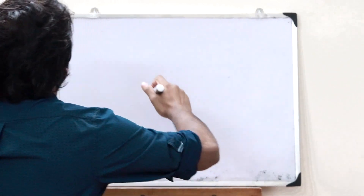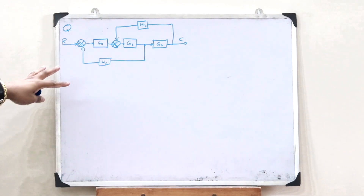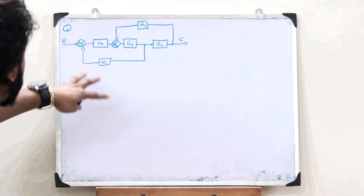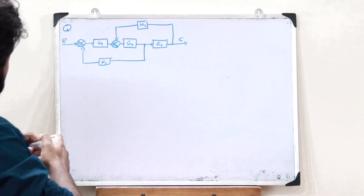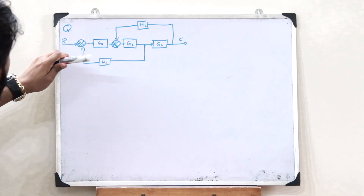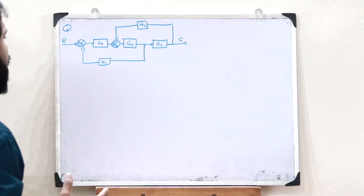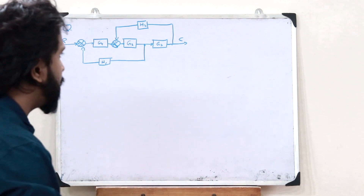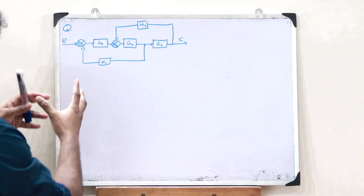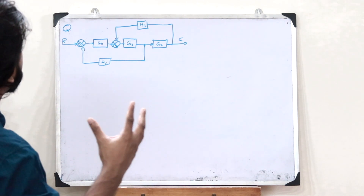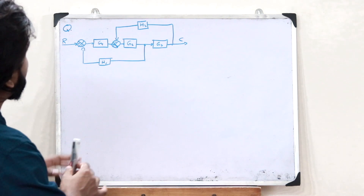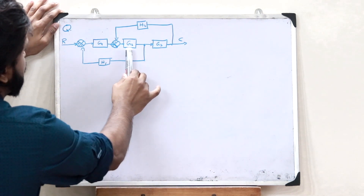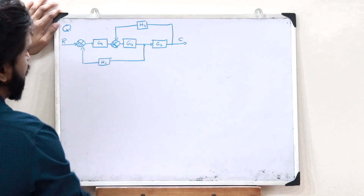Let's look at this particular question. When we see such a complex block diagram, the first thing we do is sit and analyze it. We can deduce that this diagram has three main blocks: G1, G2, and G3.